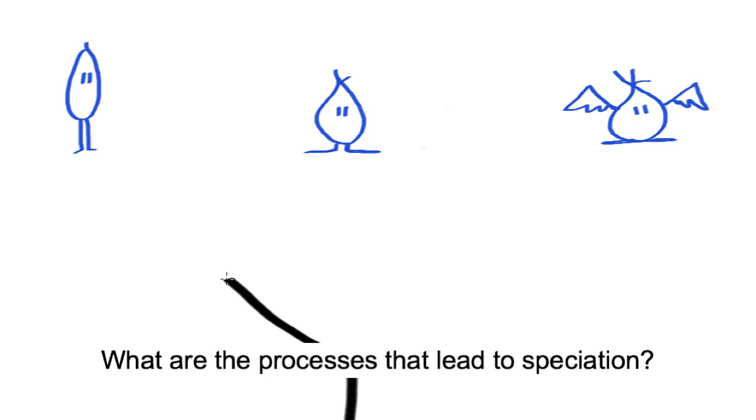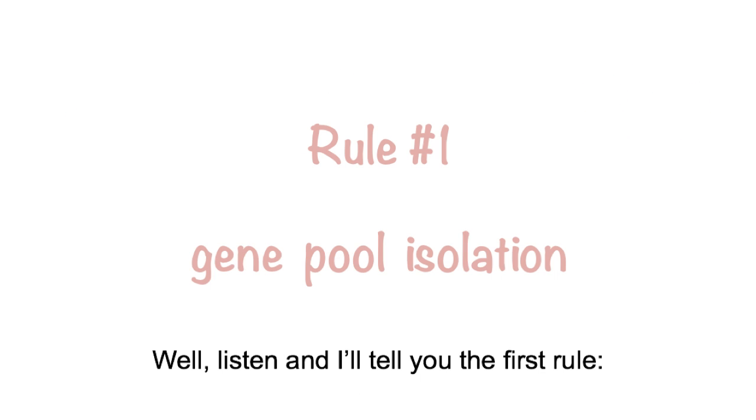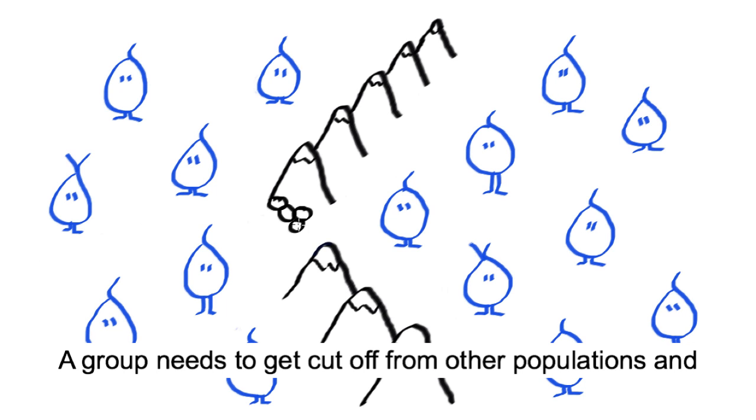What are the processes that lead to speciation? Well listen and I'll tell you the first rule: A group needs to get cut off from other populations and isolate their very own gene pool.